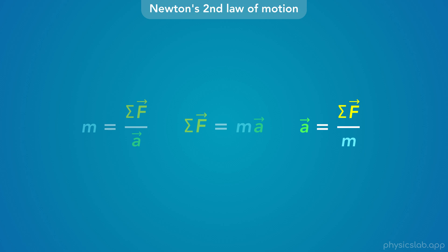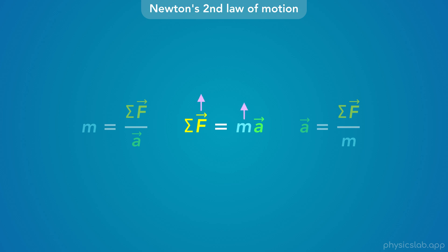The form a = F_net / m makes it easy to calculate acceleration if we know net force and mass. If net force is constant and we increase mass, acceleration decreases. If we decrease mass, acceleration increases. And with the original equation F = ma: if mass is constant and we increase the net force, acceleration also increases; decrease net force and acceleration decreases. If we keep acceleration constant and increase net force, mass must be greater; smaller net force with same acceleration means smaller mass.